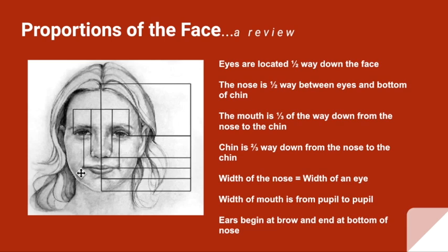And the mouth, the width of the mouth is approximately from pupil to pupil if you're in a neutral position. And the ears go from the bottom of the nose all the way to the brow bone or to the top of the eyes.